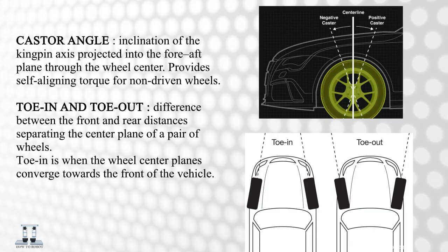Caster Angle: it is the inclination of the kingpin axis projected into the fore-aft plane through the wheel centre. It provides self-aligning torque for non-driven wheels. Toe In and Toe Out: the difference between the front and rear distances separating the centre plane of a pair of wheels. Toe in is when the wheel centre planes converge towards the front of the vehicle.